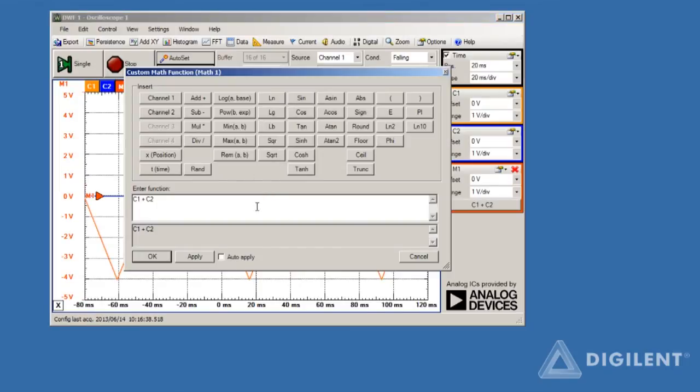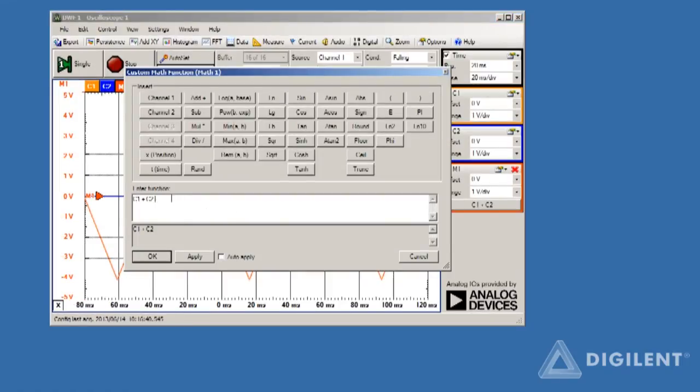A custom math window will open. Type your equation in the text box. We want channel 2 divided by 100 as our math channel.